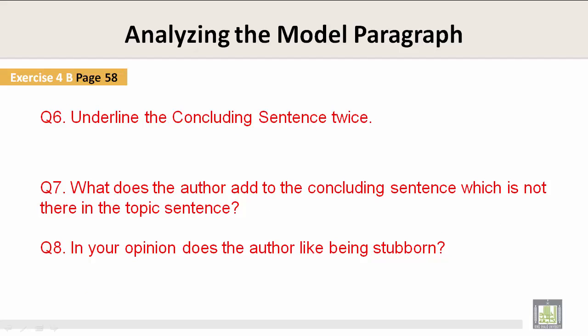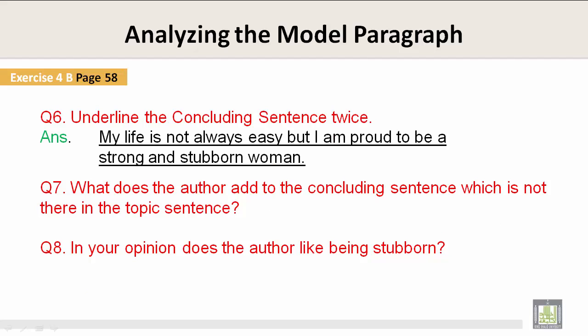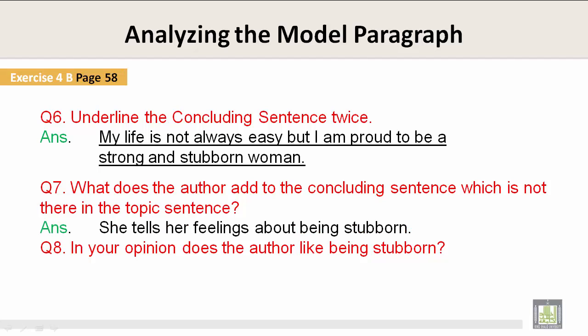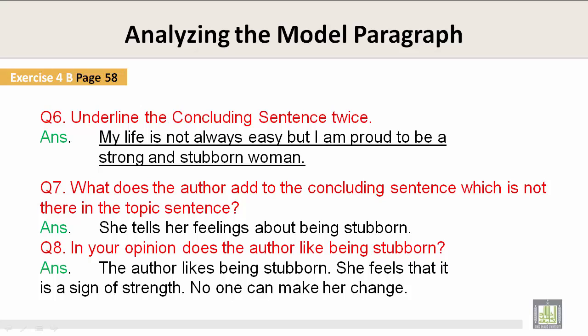Question six: Underline the concluding sentence twice. 'My life is not always easy, but I am proud to be a strong and stubborn woman.' Question seven: What does the author add to the concluding sentence which is not there in the topic sentence? She tells her feelings about being stubborn. Question eight: In your opinion, does the author like being stubborn? The author likes being stubborn. She feels that it is a sign of strength — no one can make her change.